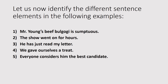Let us now identify the different sentence elements in the following examples. Sentence number one: 'Mr. Young's beef bulgogi is sumptuous.' The subject is 'Mr. Young's beef bulgogi,' 'is' is the linking verb, and 'sumptuous' functions as subject complement describing the subject. Therefore, the pattern is S-L-V-S-C. By identifying the different elements, you can now identify the basic sentence pattern.